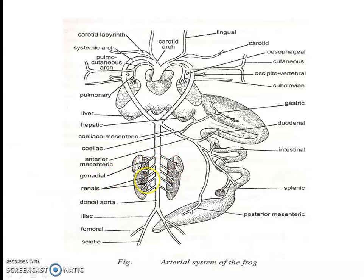Four pairs of renal arteries supply the kidneys. The first part gives off gonadial arteries: the spermatic artery in the male and the ovarian artery in the female. Beyond the kidney, the dorsal aorta divides into two pelvic arteries. From each iliac artery, the vesiculoepigastric artery supplies the urinary bladder and ventral body wall, and the femoral artery supplies the thigh. The iliac artery continues to the hind limb.